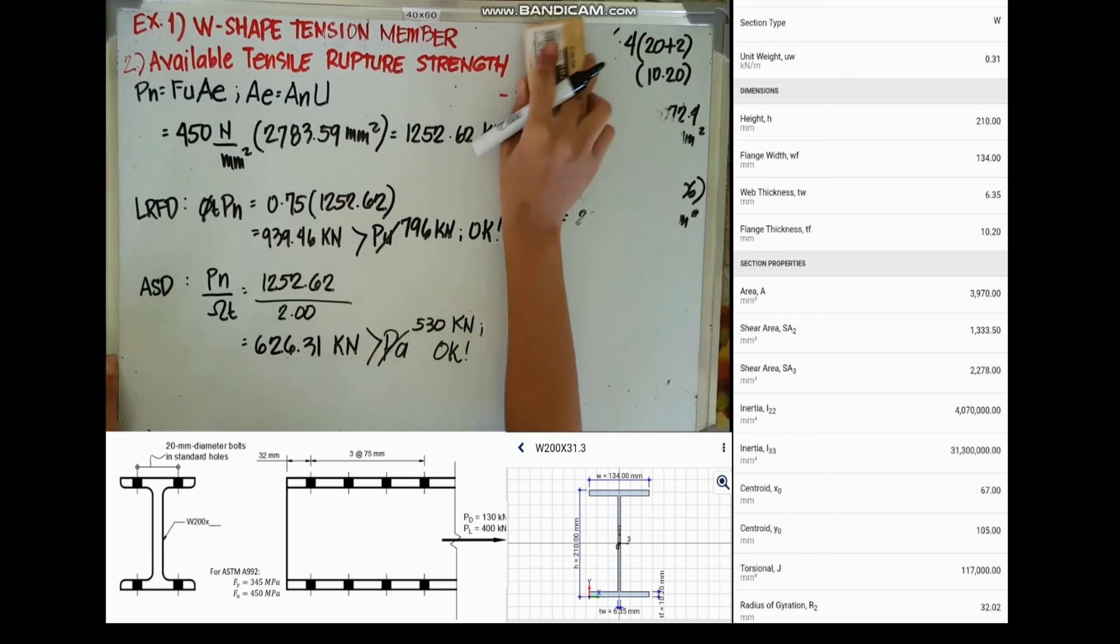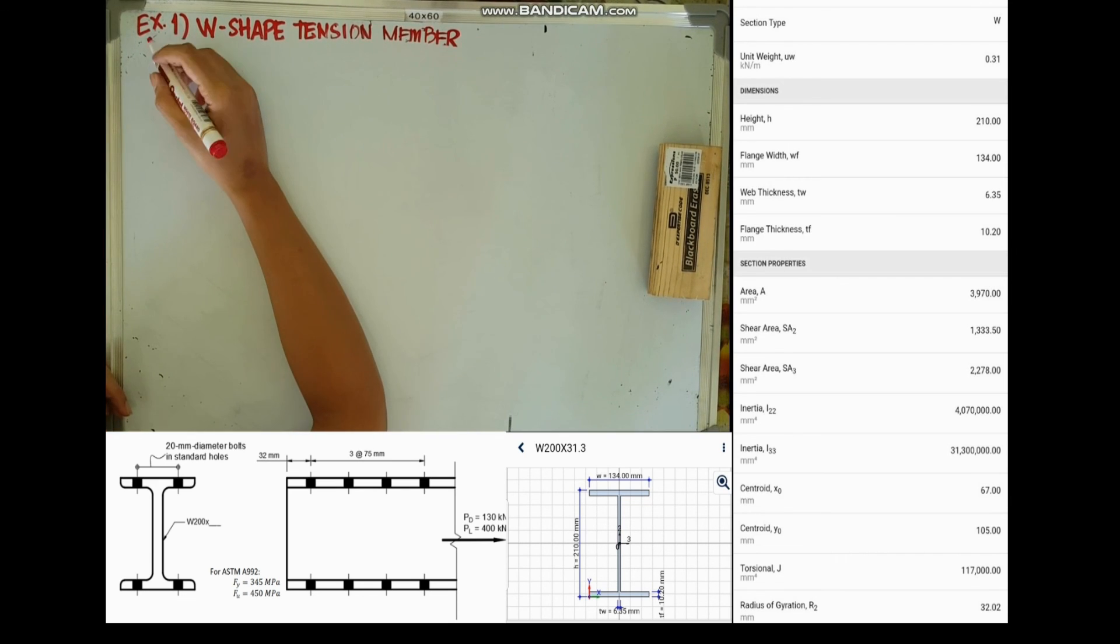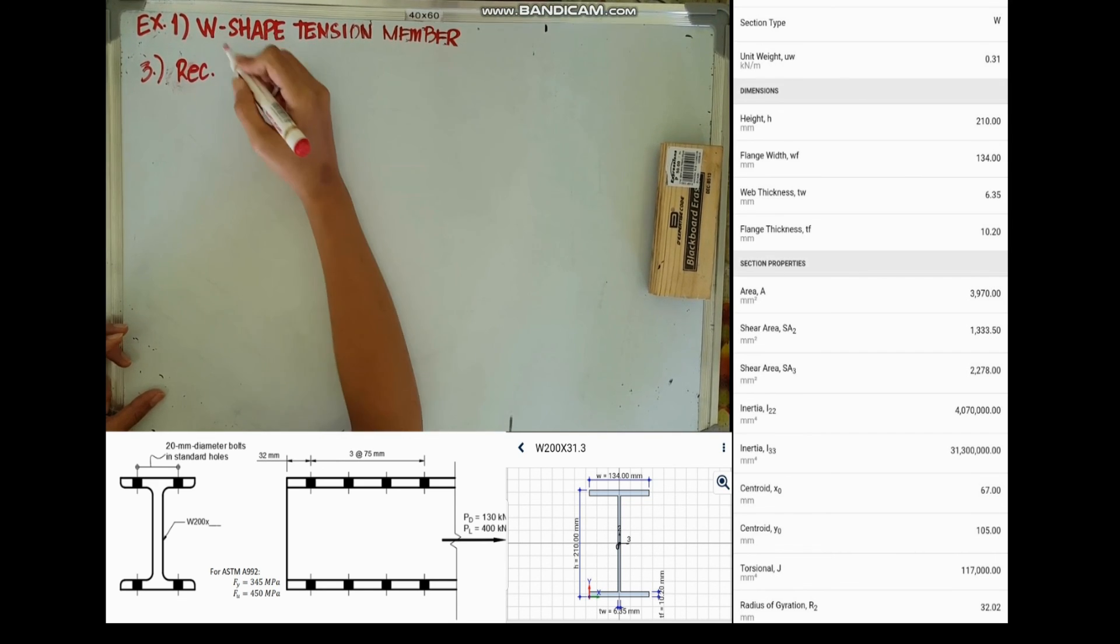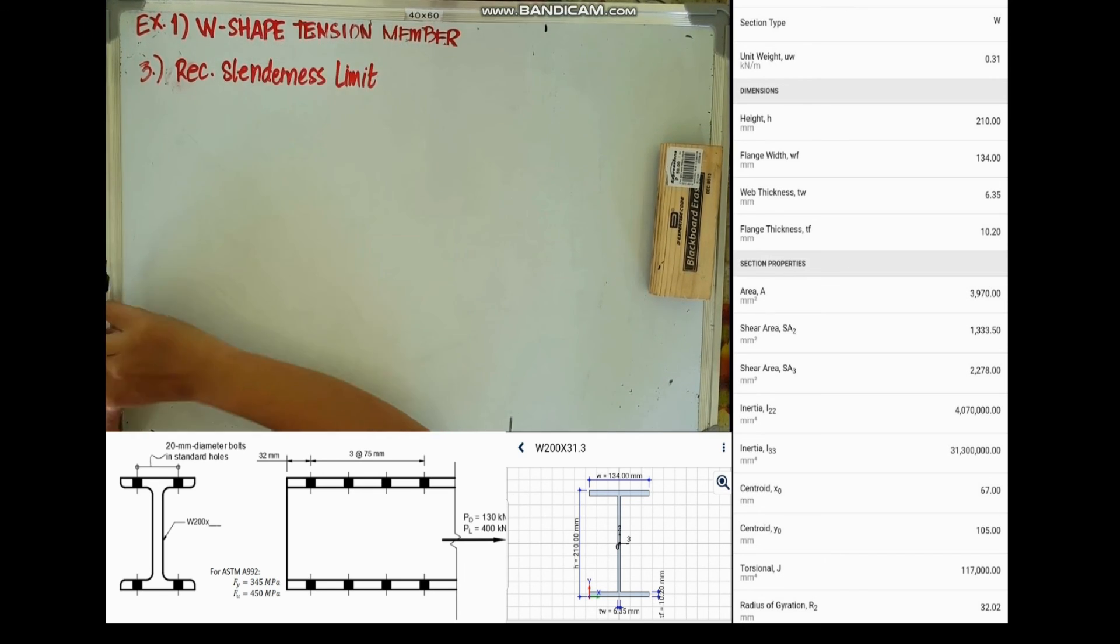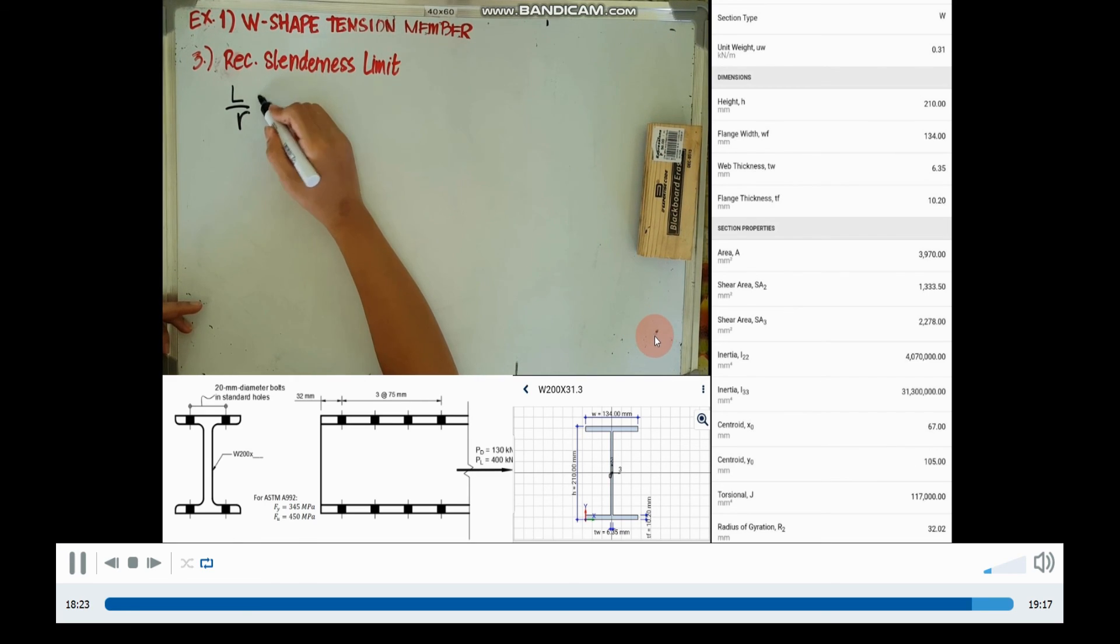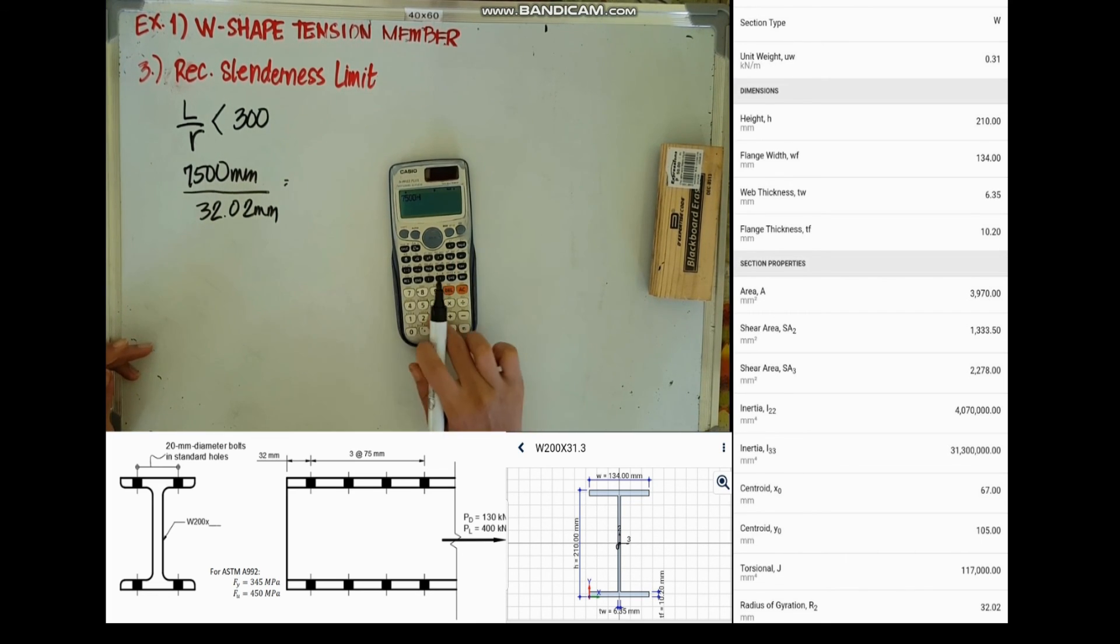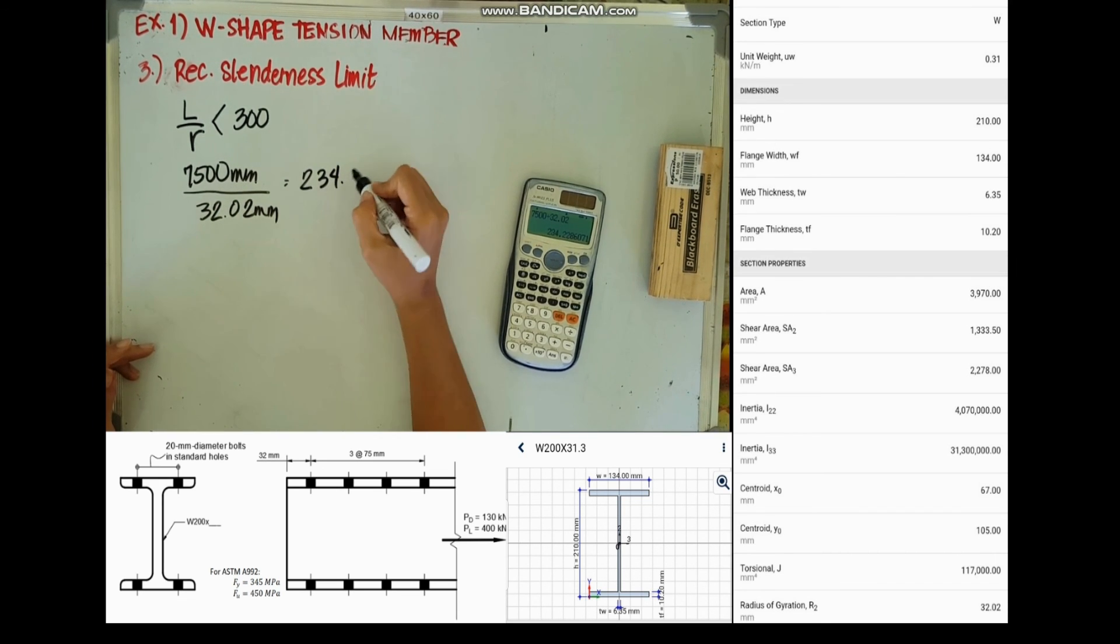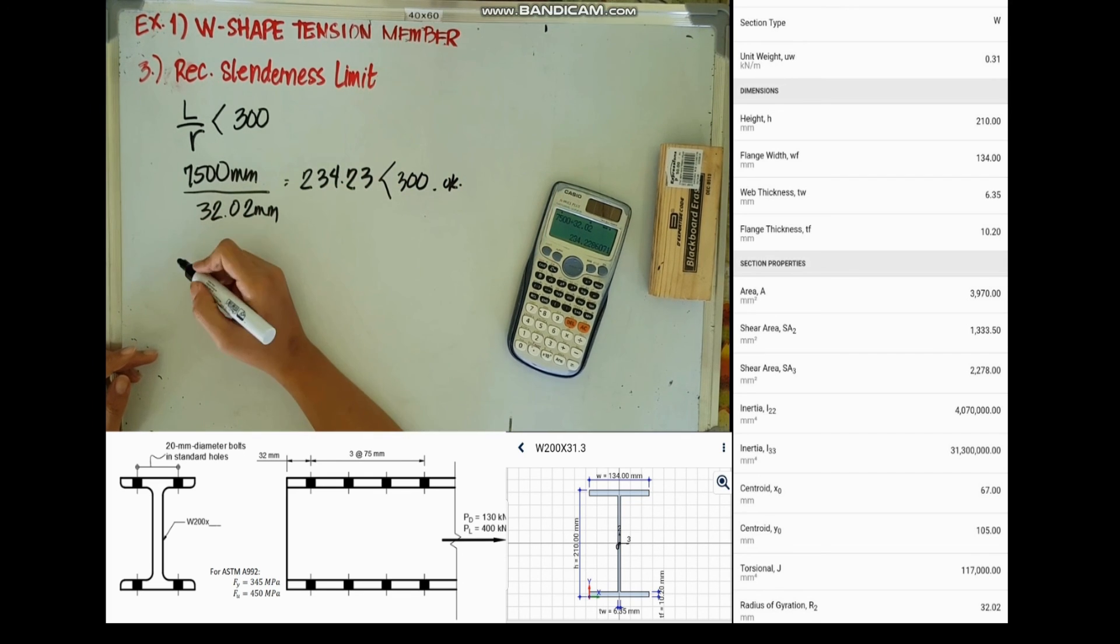There's one more thing the problem is asking for: the slenderness limit. For the recommended slenderness limit, we divide the total length of the member which is 7500 mm by the radius of gyration. The radius of gyration is 32.02, so it equals 234.23, and it is less than 300, so it's okay. It satisfied the limit.